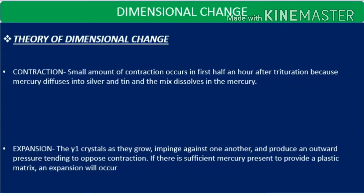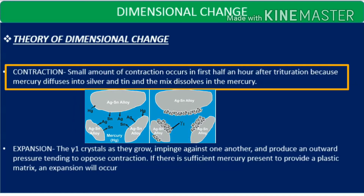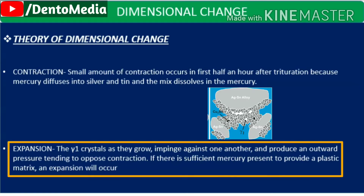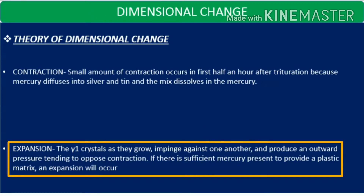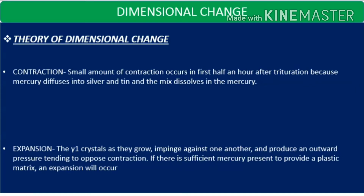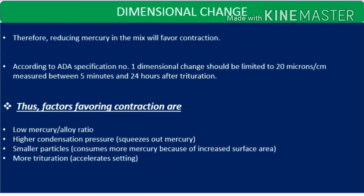Now the theories of dimensional change. Contraction first: a small amount of contraction occurs in the first half an hour after trituration because mercury diffuses into the silver and tin, and the mix starts getting dissolved in the mercury. The gamma 1 crystals, as they grow, start impinging upon one another and produce an outward pressure tending to oppose the contraction. If there is sufficient mercury present to provide a plastic matrix, an expansion will occur. Therefore, reducing mercury in the mix will favor contraction.